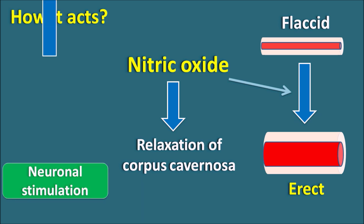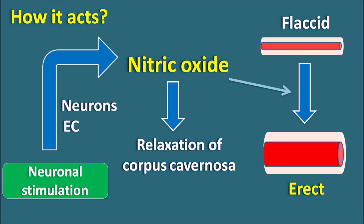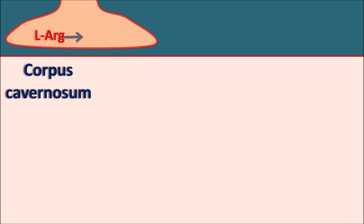The release of nitric oxide is mediated by neuronal stimulation. Both neurons and endothelial cells can release nitric oxide into the corpus cavernosum, producing relaxation of the smooth muscle and erection of the erectile tissue. Within the corpus cavernosum, L-arginine is an important precursor for nitric oxide. L-arginine is converted into nitric oxide by the enzyme nitric oxide synthase (NOS). Since this enzyme is responsible for nitric oxide synthesis within neurons, it is called nNOS — neuronal nitric oxide synthase.